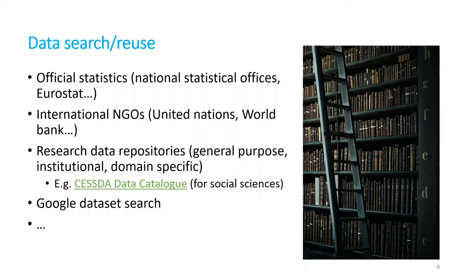I also look at the ICPSR data catalog, which has a lot of previous social science research but also other fields with data repositories. We also have general-purpose institutional repositories, which we'll discuss more later, as well as Google Dataset Search and many other options. Does anyone have a source for finding data that's not listed here? — World Values Survey? Yes, you would find that in a research repository.